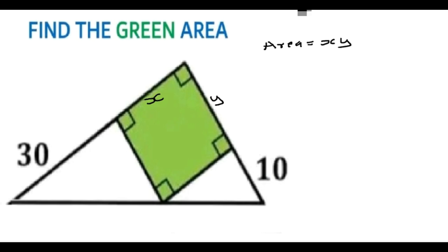To get the value of X times Y, we'll be using congruence. If we take this outer triangle to be triangle ABC, and this is point D, we have from B to D is given to be 30. If we have this point, say point G, then from G to C will be given to be 10.